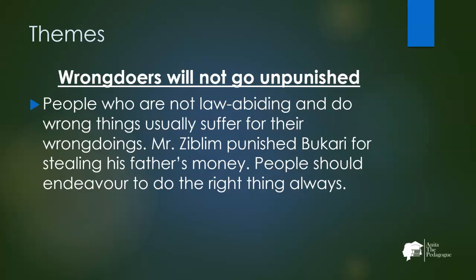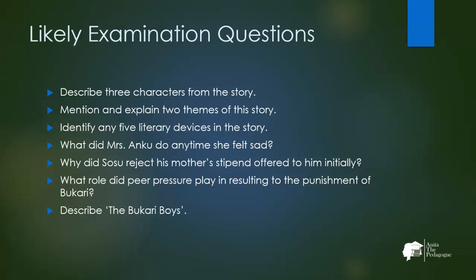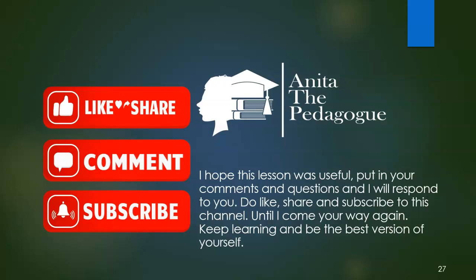This brings us to the end of our analysis of 'Sosu and the Bukhari Boys.' Some likely examination questions include: describe three characters from the story; mention and explain two themes; identify any five literary devices; what did Mrs. Uncle do anytime she felt sad; why did Sosu reject his mother's stipend; what role did peer pressure play in the punishment of Bukhari; and describe the Bukhari Boys. I hope this lesson was useful — like, share, and subscribe to this channel. Keep learning and be the best version of yourself.